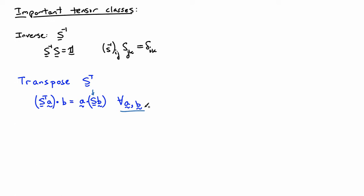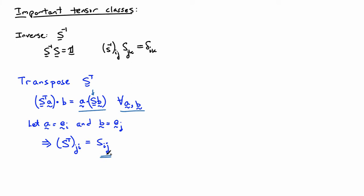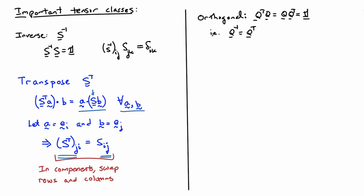To see the components, set a equal to e_i and b equal to e_j. On the right-hand side you get S_ij, and on the left-hand side you get S transpose_ji. So the components of the transpose are obtained by swapping the first and second indices — equivalently, switching rows and columns — which is completely consistent with the definition of transpose in elementary linear algebra.